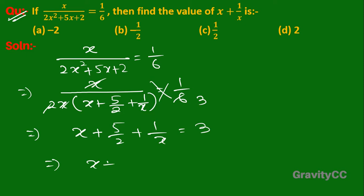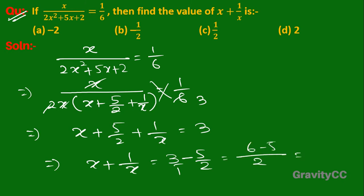x + 1 upon x is equal to 3 minus 5 upon 2, so 6 minus 5 equals 1 upon 2. So the required answer is 1/2, and option C is the correct answer.